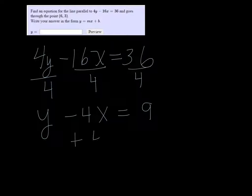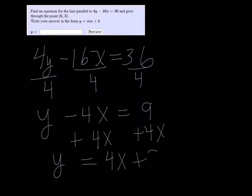And then if we add 4x to both sides, we'll have y by itself. And we need that in order to get the slope.